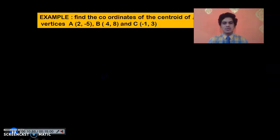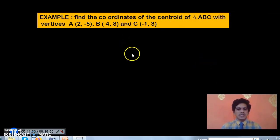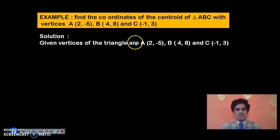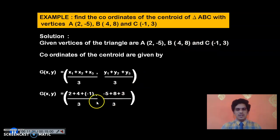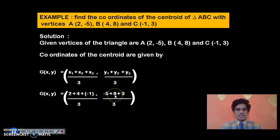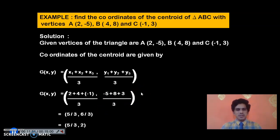Let me discuss an example problem. Find the coordinates of the centroid of triangle ABC with vertices A(2, -5), B(4, -5), and C(-1, 3). Labeling these as (x1,y1), (x2,y2), (x3,y3), apply the formula: x-coordinate = (2 + 4 + (-1)) / 3 = 5/3; y-coordinate = (-5 + (-5) + 3) / 3... wait — adding x-coordinates: 2+4-1 = 5/3. For y: the values give 6/3 = 2. So the centroid is (5/3, 2).